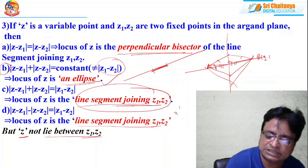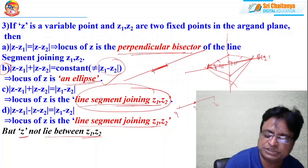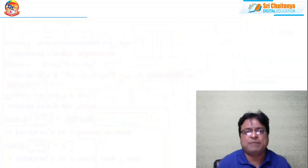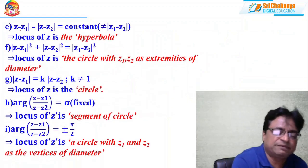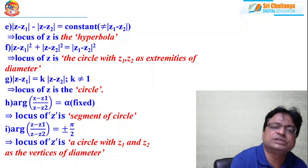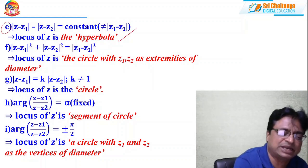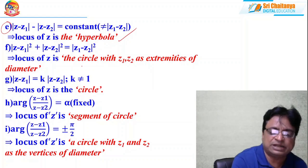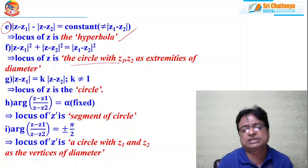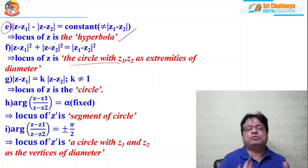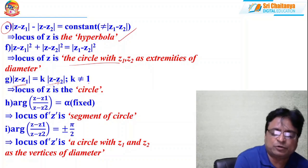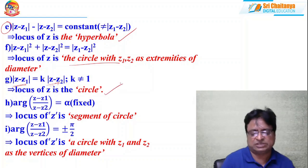When the difference of distances is equal to a constant not equal to the distance between the two points, the locus of z is a hyperbola — analogous to the definition of an ellipse. When the sum of the squares of the distances is equal to a constant, the locus is a circle, as we have already derived. Also, whenever the distance from one point is k times the distance from another point, where k ≠ 1, the locus of z is a circle — this is the Apollonius circle and is very important.